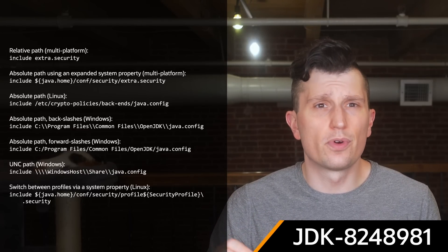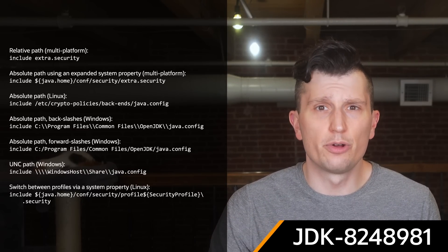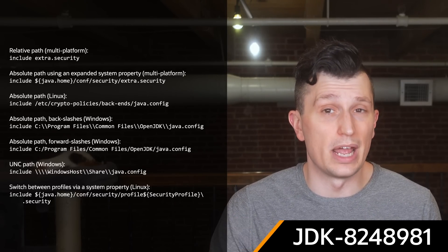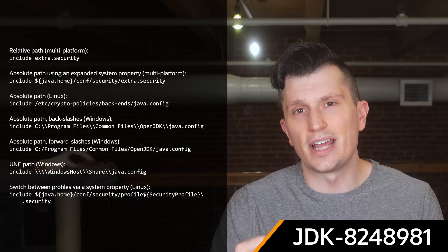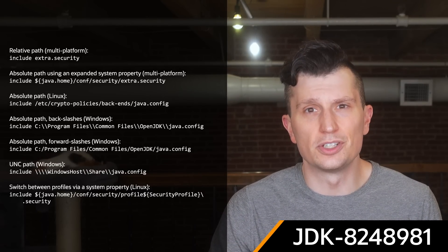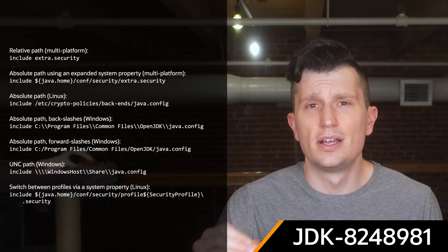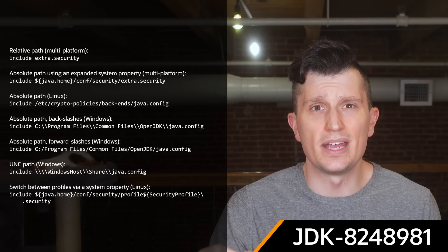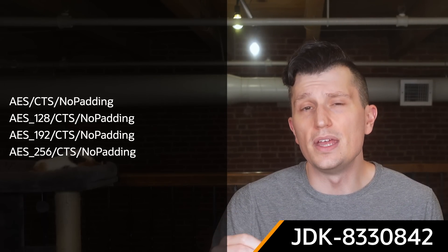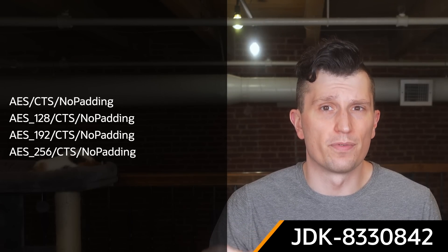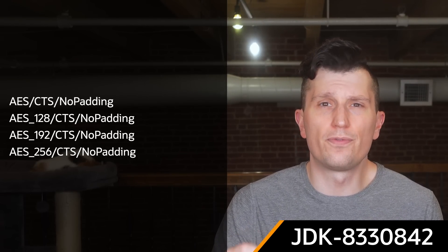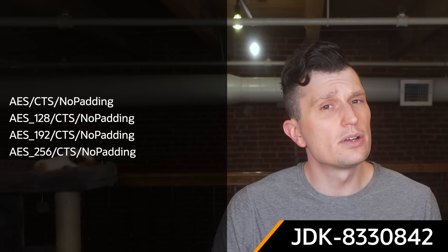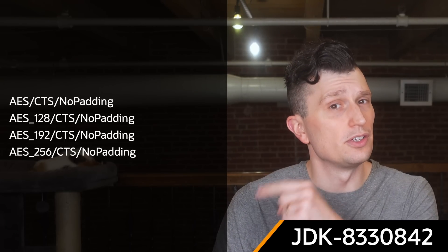A new section for the PSS ParameterSpec algorithm names has been added to the Java Security Standard Algorithm Names specification. This section lists the standard hash and message generation function algorithms that can be specified when initializing an RSASSA-PSS signature. The SunPKCS11 provider has also been enhanced to support four new AES-CTS transformations. For additional details on this change, be sure to check the JBS issue.